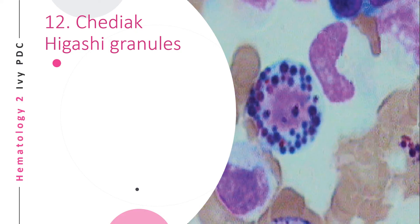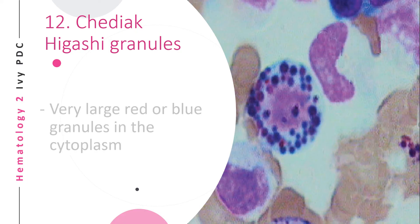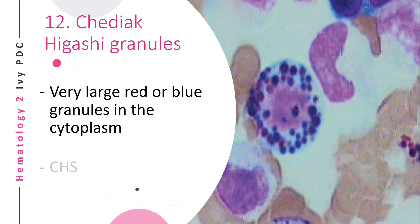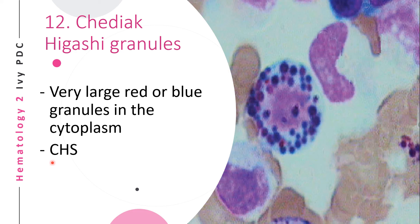Another WBC anomaly is the Chédiak-Higashi granules — very large red or blue granules in the cytoplasm of white blood cells. White blood cells with Chédiak-Higashi granules have decreased phagocytic activity and are seen in Chédiak-Higashi syndrome.